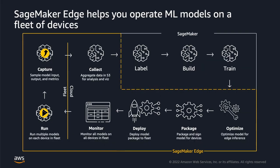Now let's have a look at how this fits into the machine learning lifecycle with Edge devices. The initial model can be created in SageMaker. That model then gets optimized and packaged for deployment on a fleet of Edge devices. When the model is running on a device, the Edge agent runtime lets you capture data from those models and send that data back into the cloud. The uploaded data can be used to retrain the model for better performance, and that updated model can then go through the same cycle again.